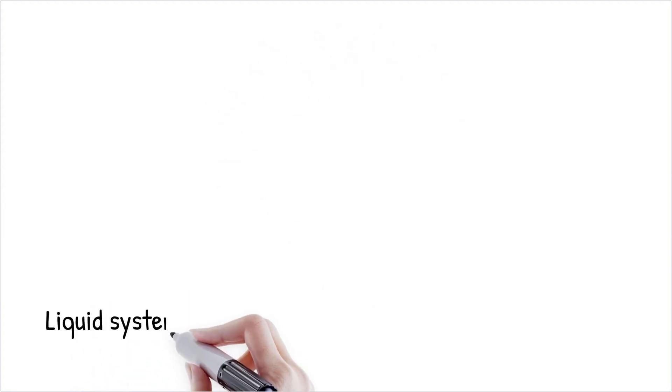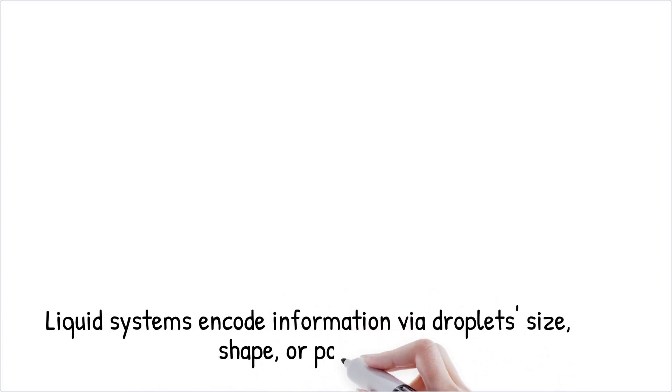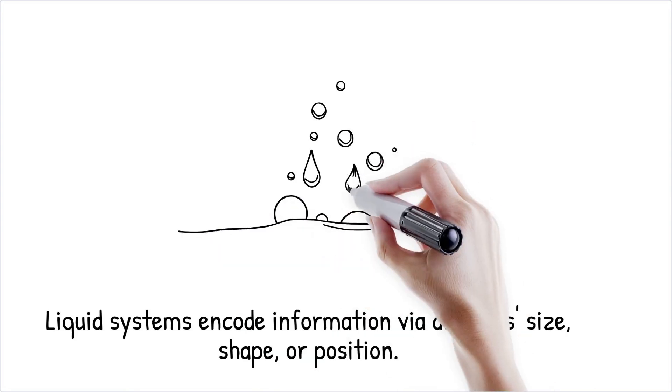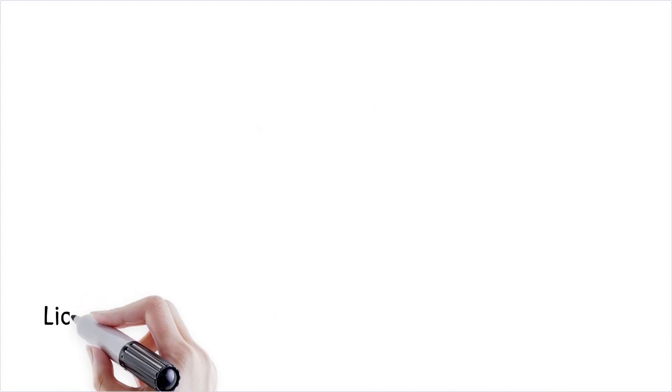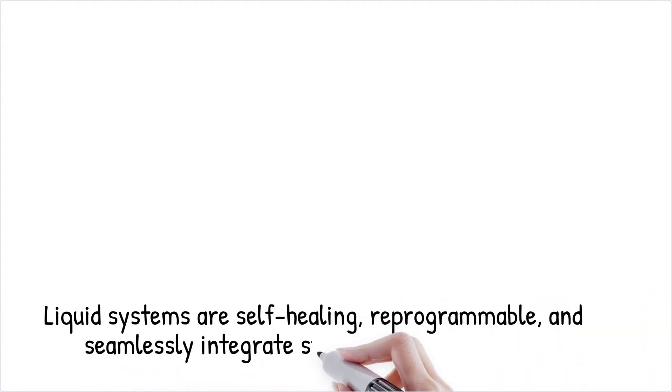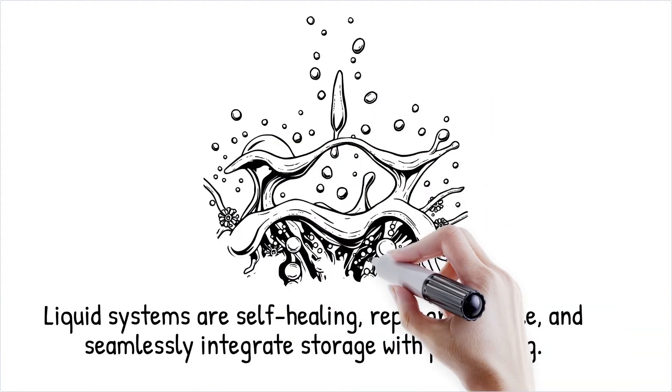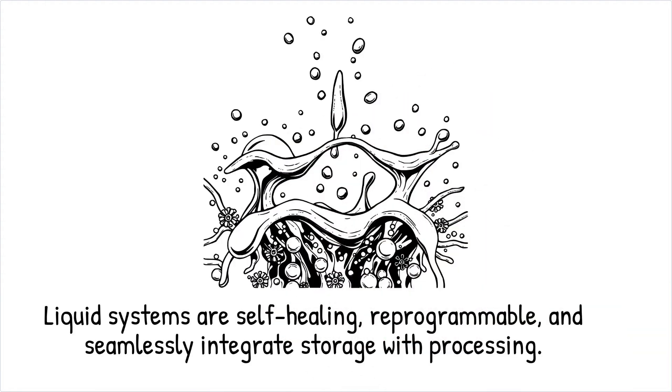Liquid computing systems can encode information in a variety of ways, such as the size, shape, or position of droplets, as well as through chemical gradients or phase changes. This capacity enables liquid systems to function as dynamic data storage devices. Unlike traditional storage media, liquid systems offer self-healing and reprogrammable properties, making them durable and adaptable in challenging environments. By encoding information in fluidic states, these systems also enable seamless integration of storage and processing.